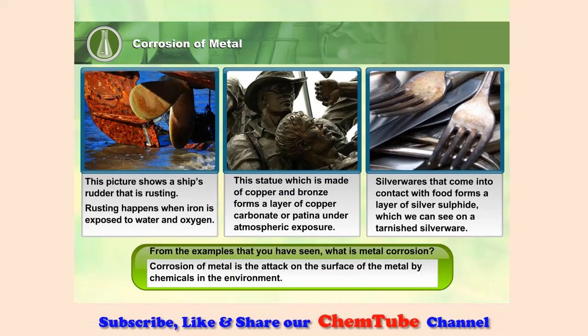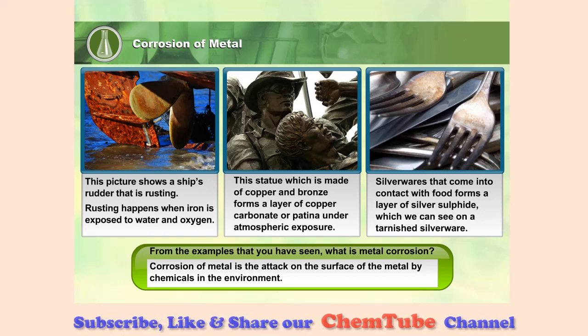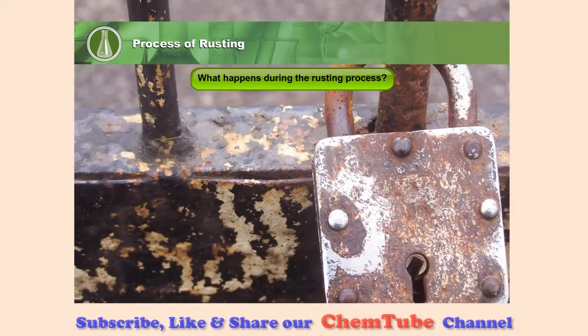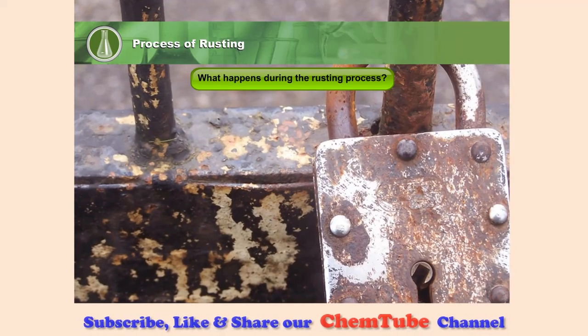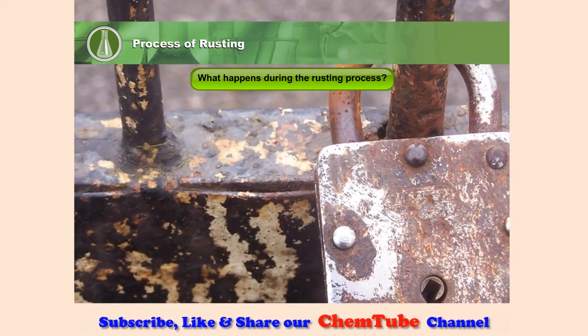Corrosion of metal is the attack on the surface of the metal by chemicals in the environment. What happens during the rusting process?